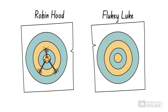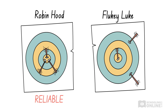Fluky Luke takes the stage and lands his first arrow in the bullseye. Unfortunately, both of his following shots miss the target. It seems that Fluky Luke's first shot was just luck. As we can see, Robin Hood is the more reliable archer, as he consistently hits the bullseye. Compared to Robin Hood, Fluky Luke is less reliable.